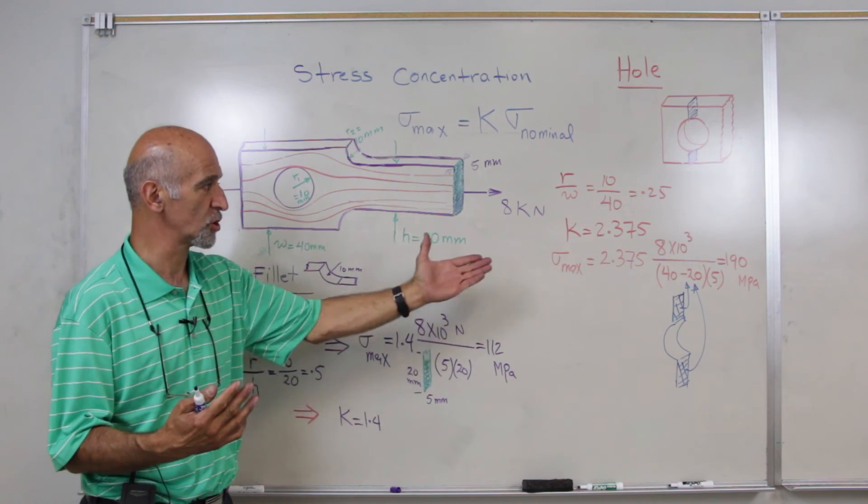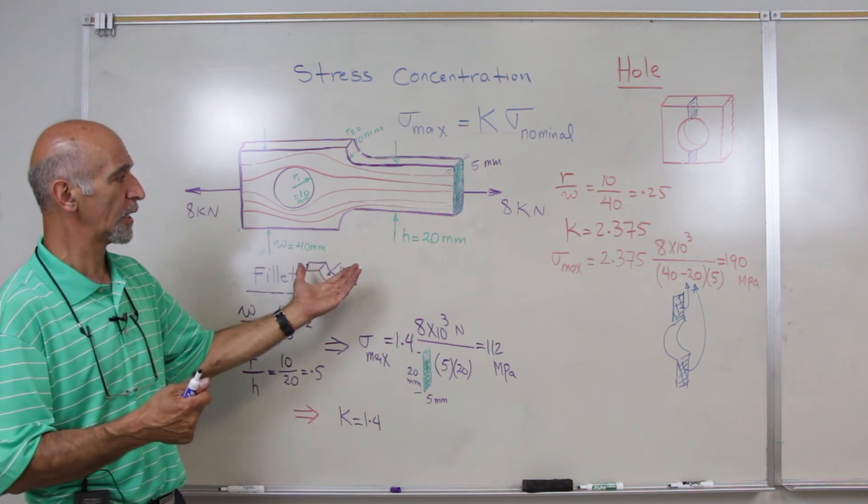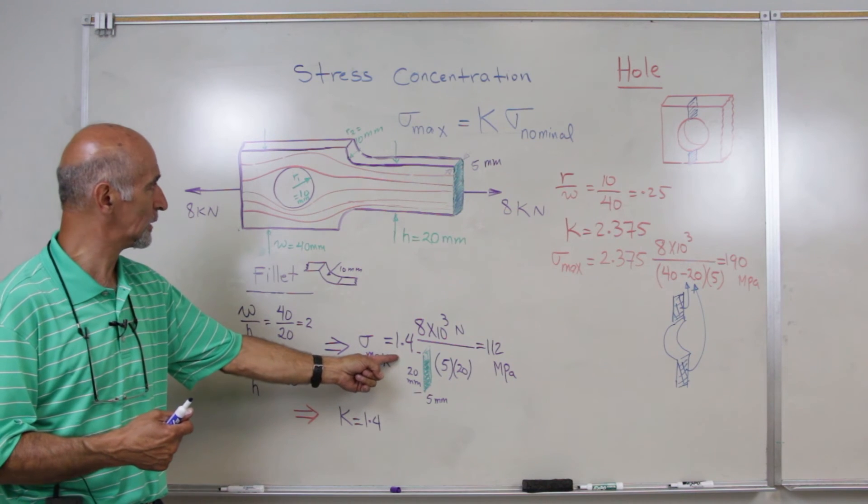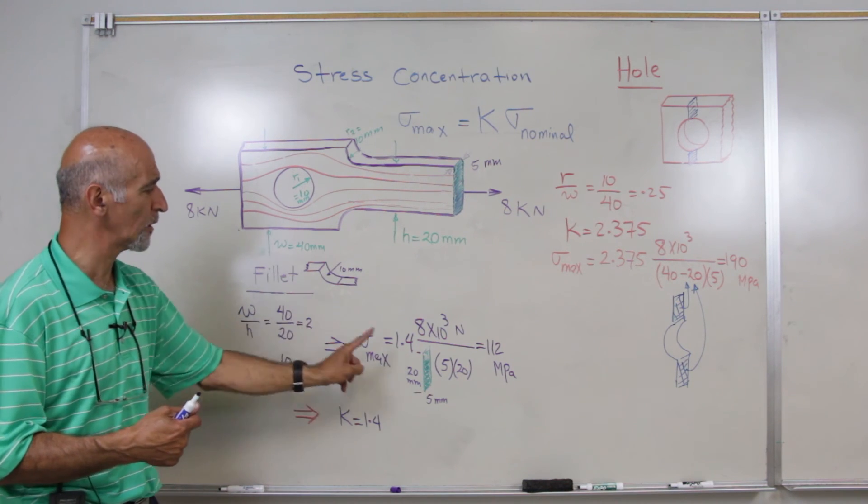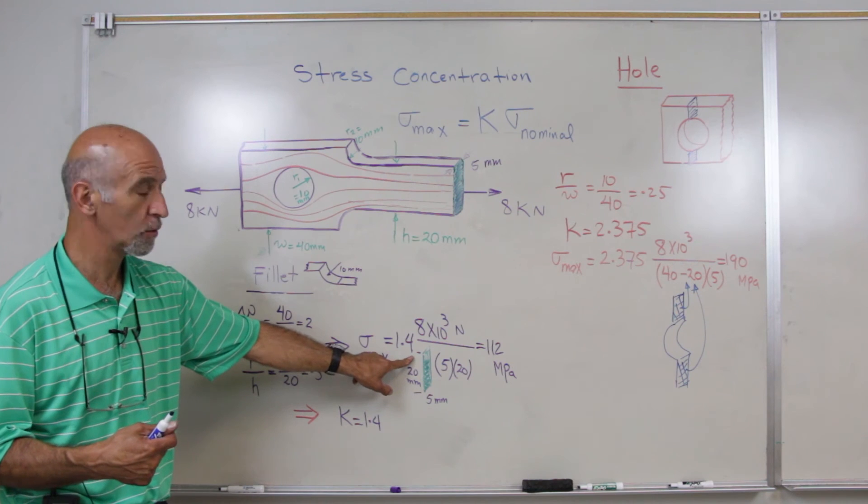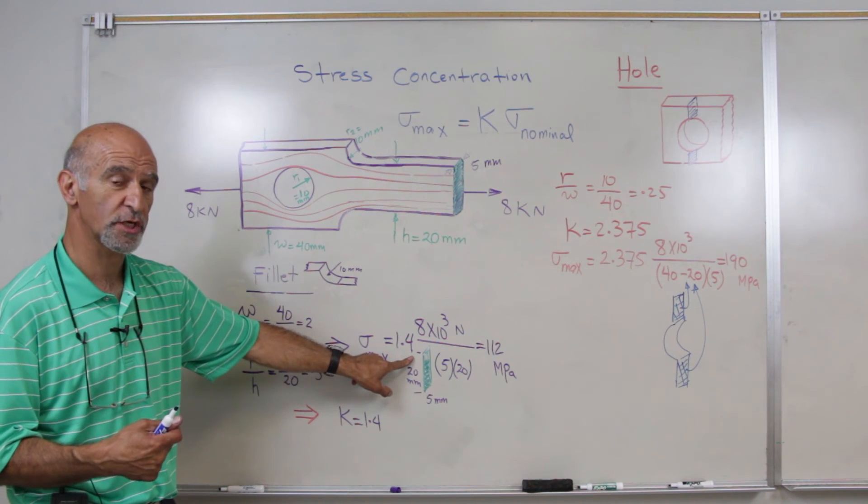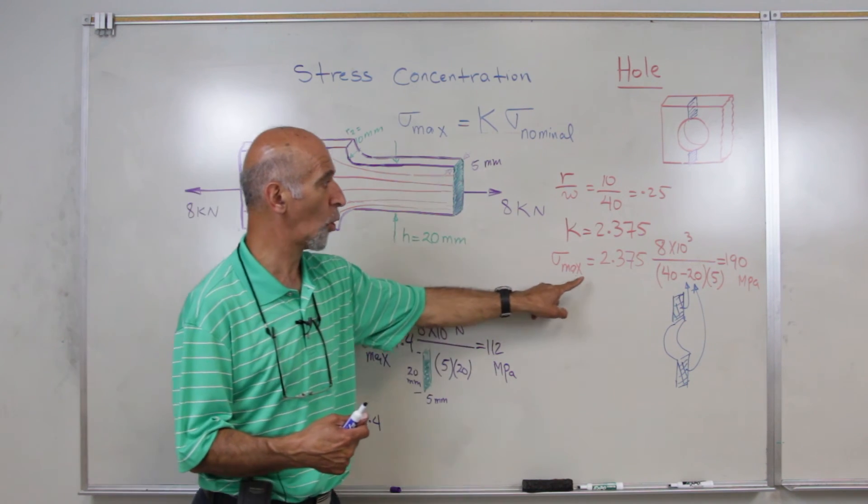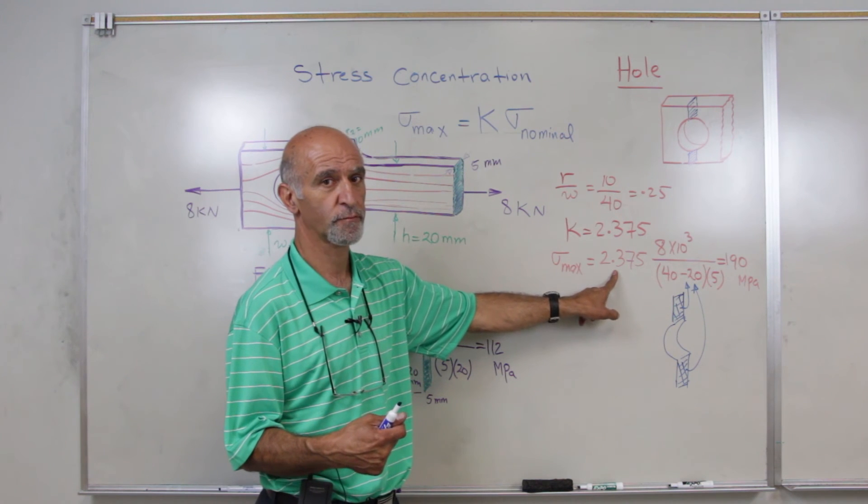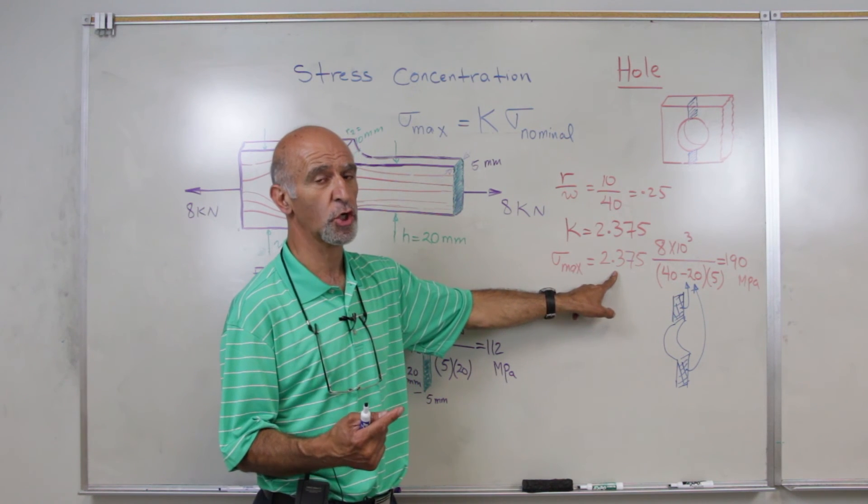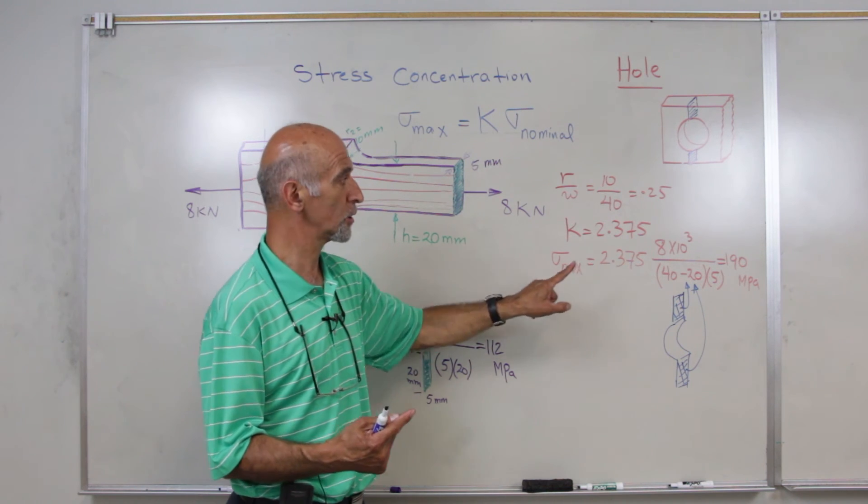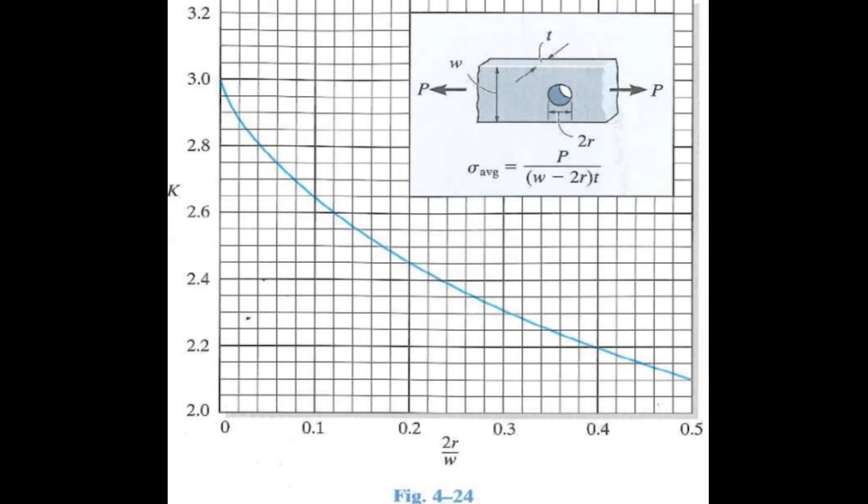But also, looking at the stress concentration factors, we look at that the fillet is 1.4, basically rises the stress by 1.4, but the hole rises by 2.375. Now it's interesting to look at the graph for the hole where you see the stress concentration can cause the stresses to rise all the way up to three times the nominal stress.